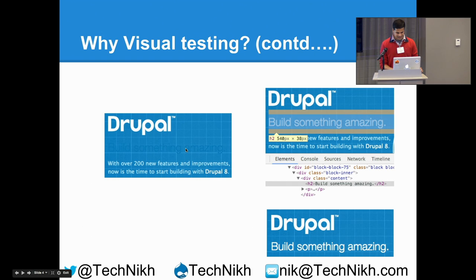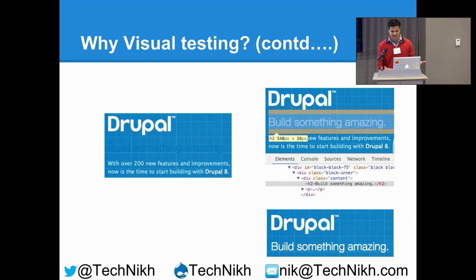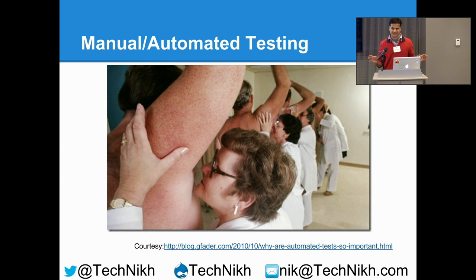Why did it happen? Because it was an H2 — a good developer shouldn't target it so broadly. As you can see, even the homepage subtitle and slogan use H2, and that's why it changed to blue. This would have been caught if we were doing visual testing on the homepage along with the page being modified. But it's hard — Drupal has thousands of pages. It's hard to do manually, and there are good reasons to do automation.